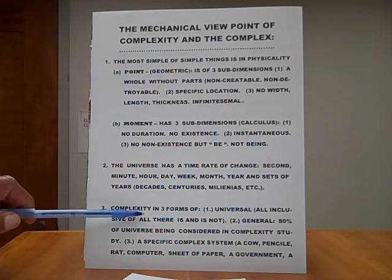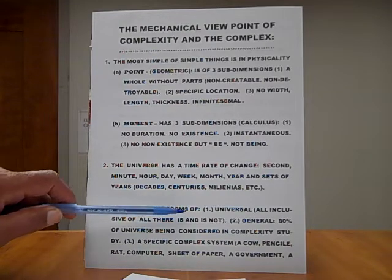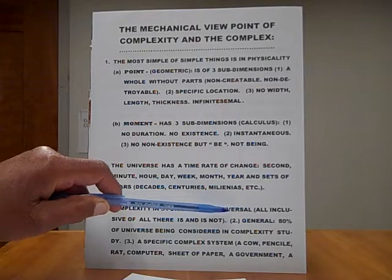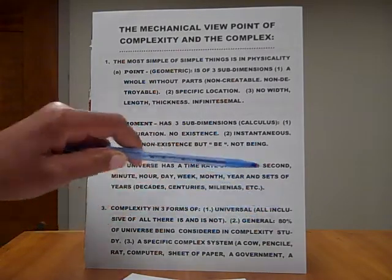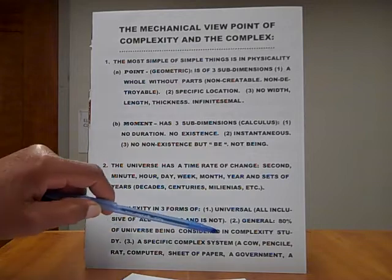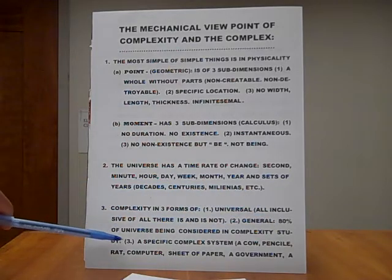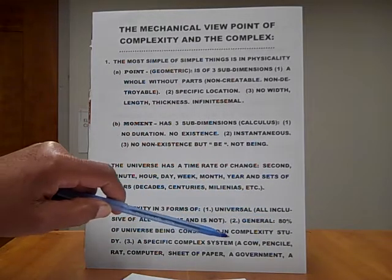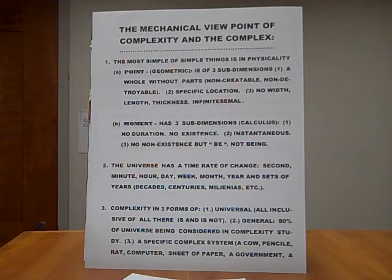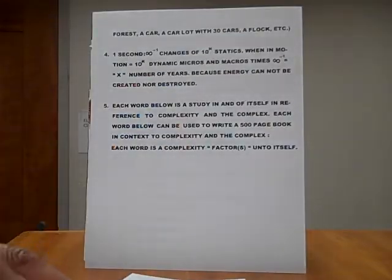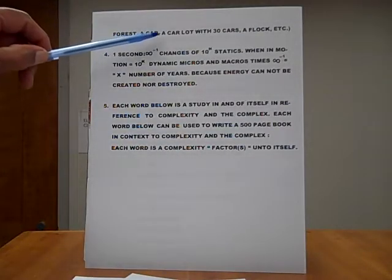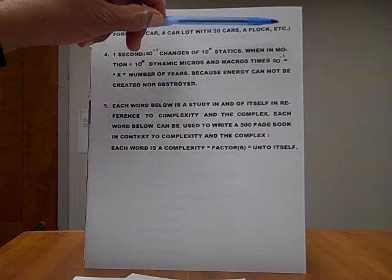Number three, complexity in three forms of, number one, universal, all-inclusive of all there is and is not. Number two, general, 80% of universe being considered in complexity study. Number three, a specific complex system. A cow, a pencil, a rat, a computer, a sheet of paper, a government, a forest, a car, a car lot with 30 cars, a flock, etc.